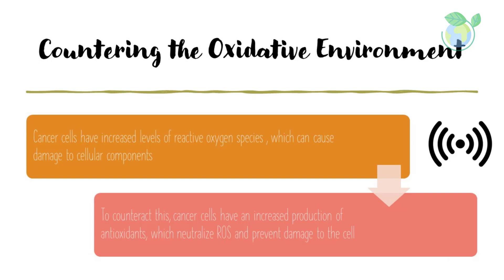Countering the Oxidative Environment: Cancer cells have increased levels of reactive oxygen species (ROS), which can cause damage to cellular components. To counteract this, cancer cells have an increased production of antioxidants, which neutralize ROS and prevent damage to the cell.